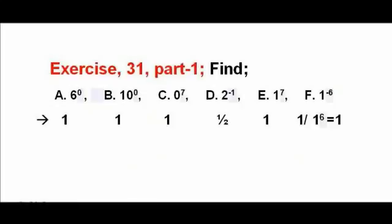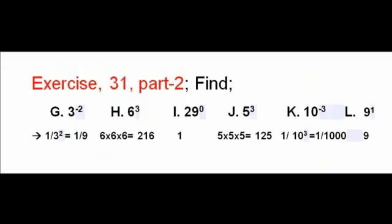Exercise 31, Part 1. Find Exponent Values of A, B, C, D, E, and F. Their answers are 1, 1, 1, 1/2, 1, and 1 respectively. See Image.